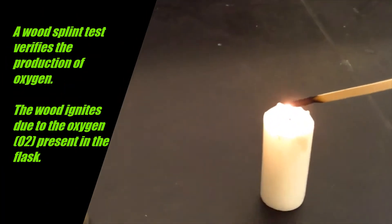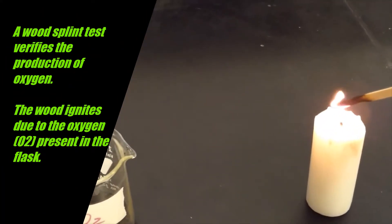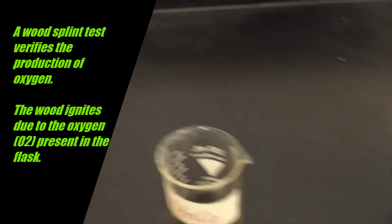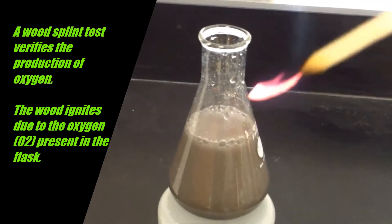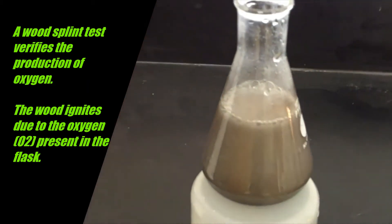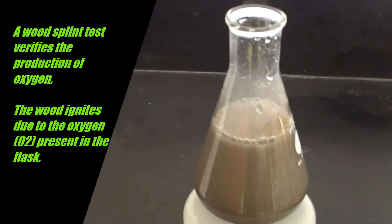A wood splint test can be done to prove that oxygen gas is being made by the reaction. Once the reaction is going, there is a high concentration of oxygen in the upper part of the flask. This causes the piece of wood with the glowing ember to reignite and start burning again.